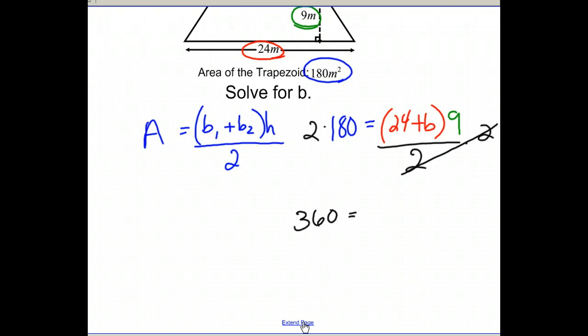So on the left, I have 360. I'm left with 24 plus B, all multiplied by 9.